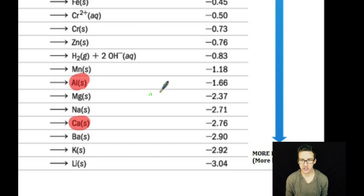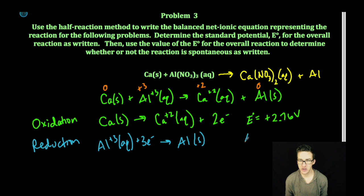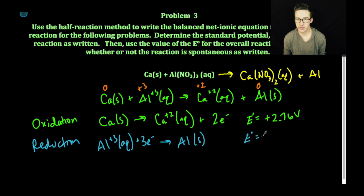Aluminum's reduction potential is negative 1.66 volts, also a negative reduction potential, so also not very likely to gain electrons. However, it is more likely to gain electrons than calcium will. So because aluminum is being reduced, I'm going to simply leave its reduction potential as is at negative 1.66 volts.